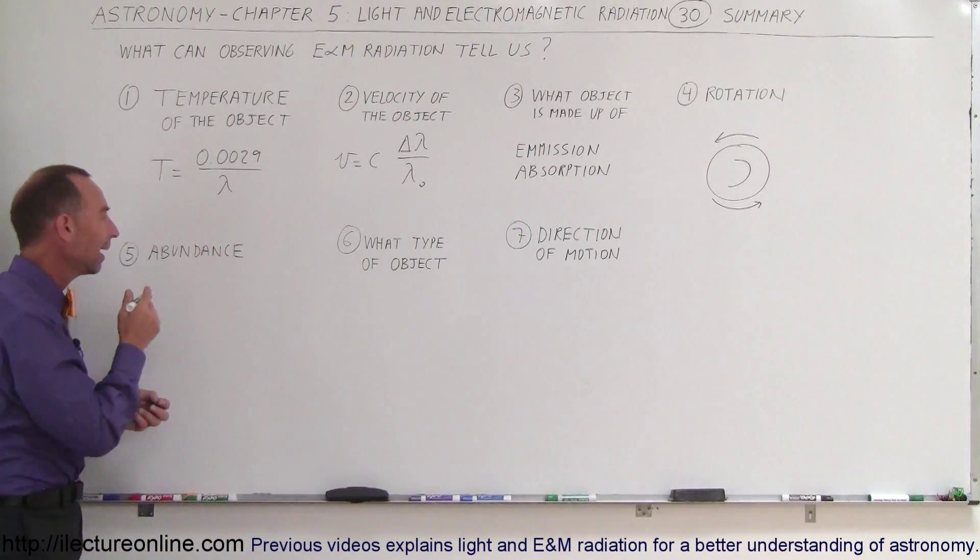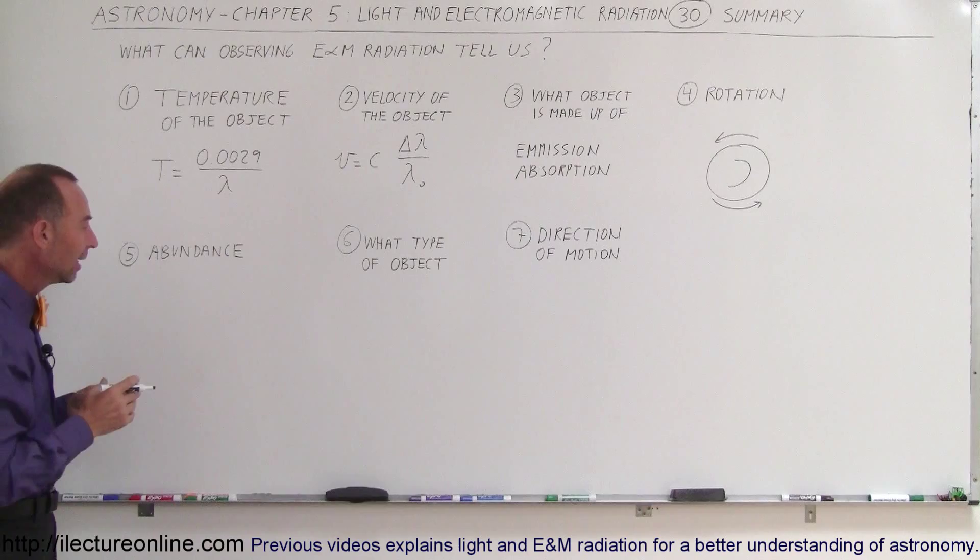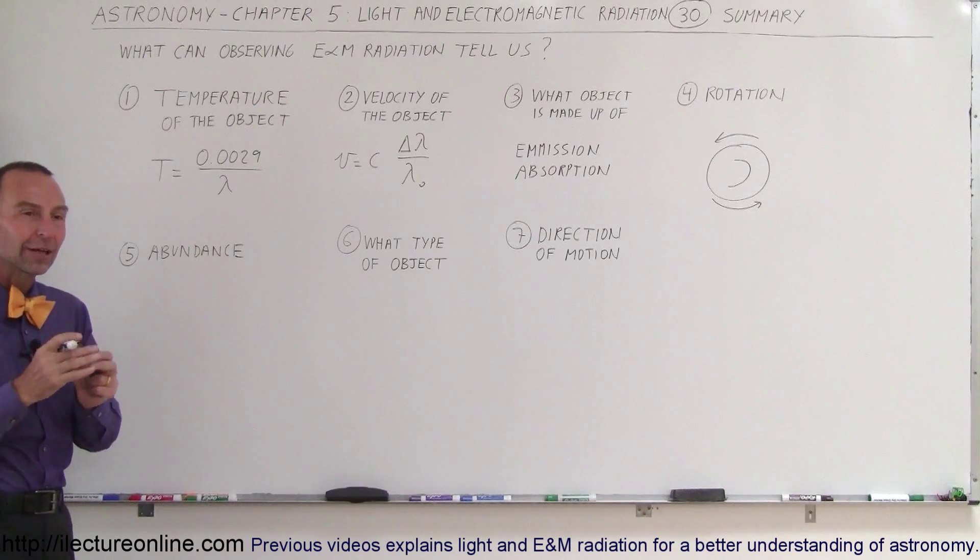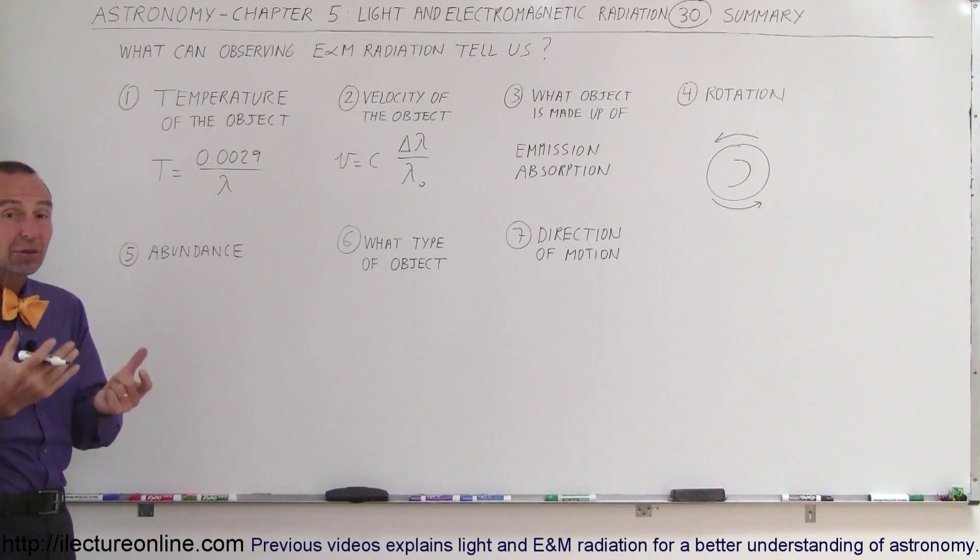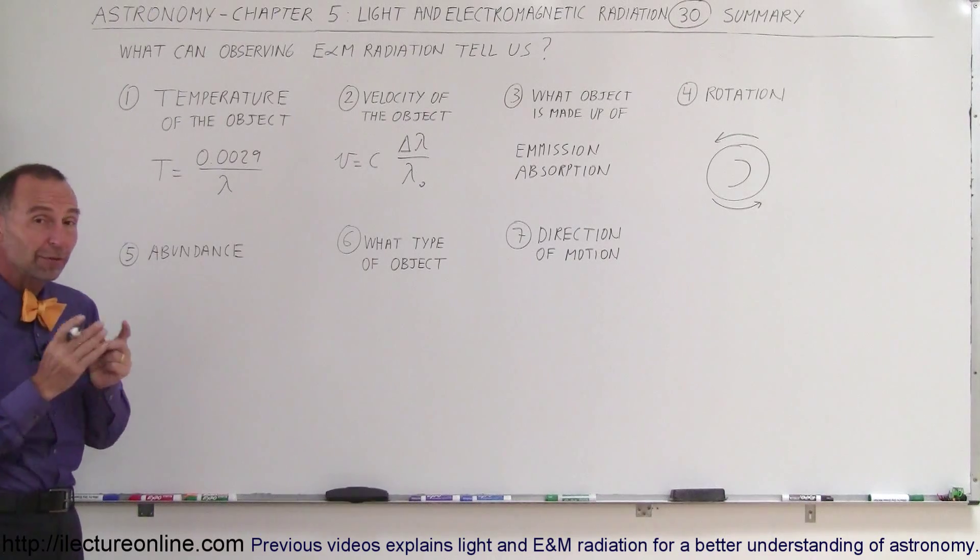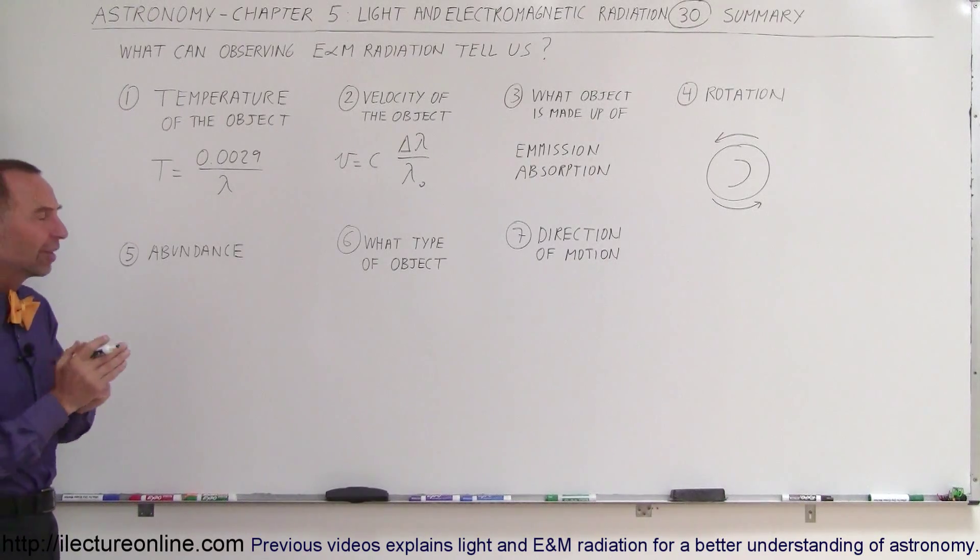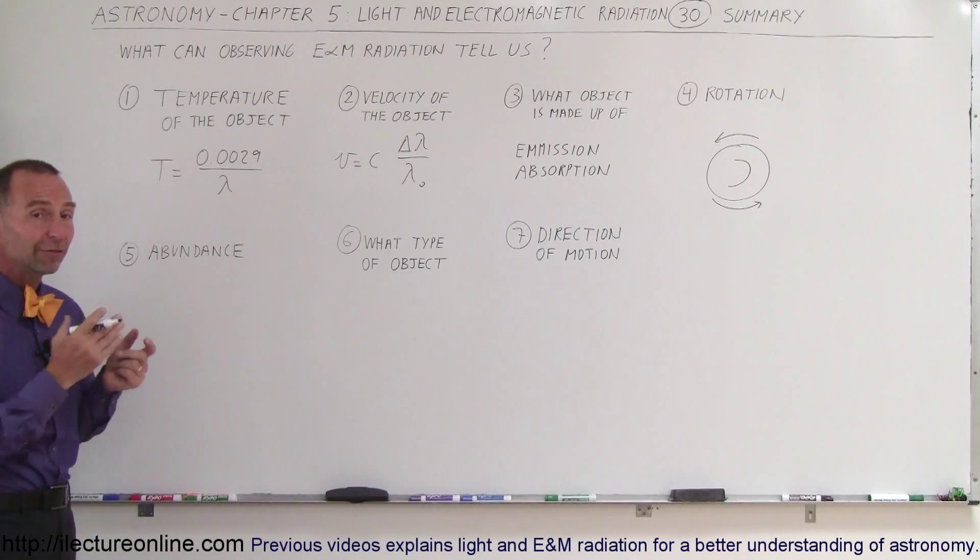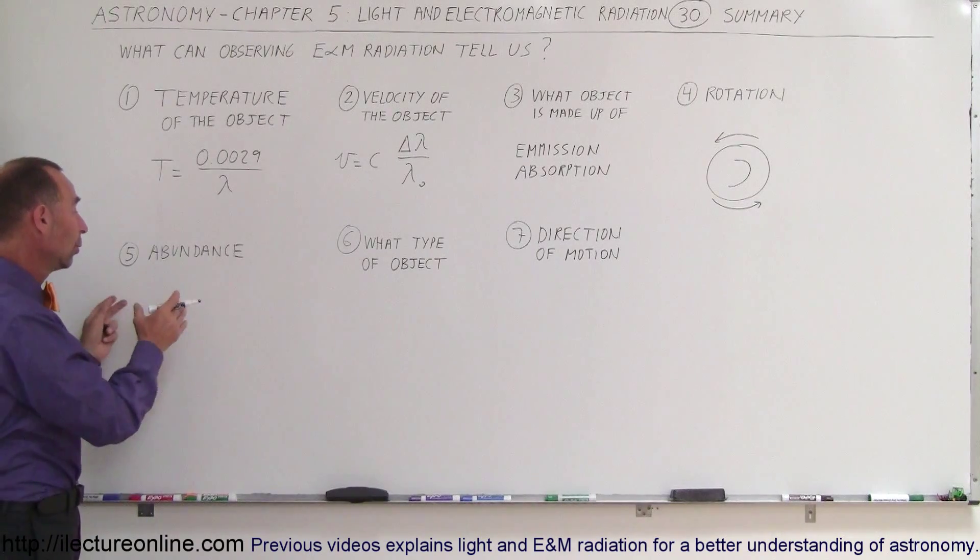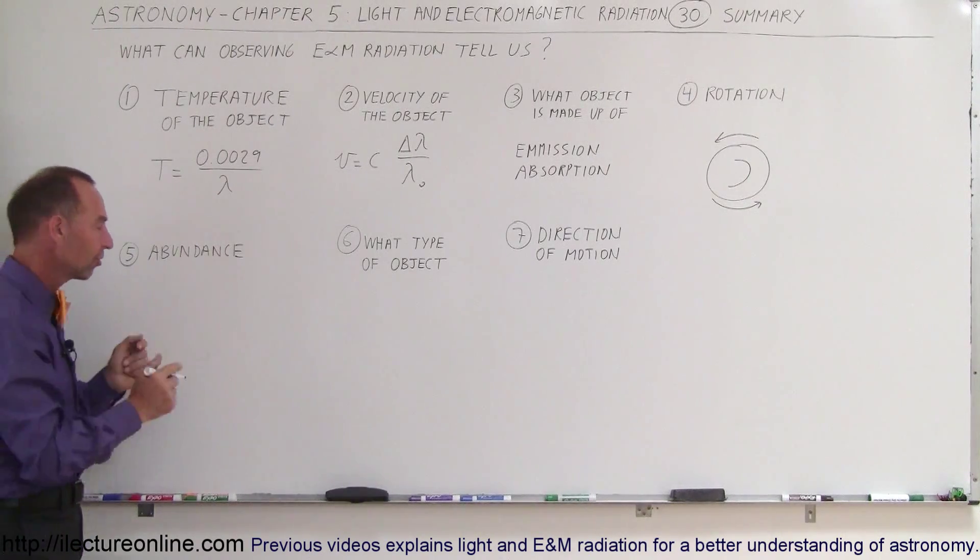Also, we can tell the abundance of the elements in the object. If there's a lot of that element there, the specific lines of the emission spectrum or the absorption spectrum will be very strong, they're very pronounced, and so we can see that the amount of the material there will be very much a function of how pronounced those lines are.